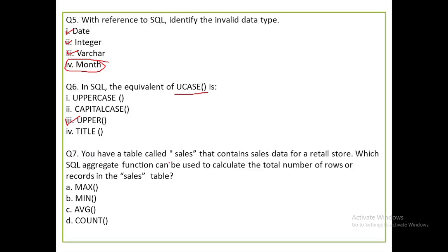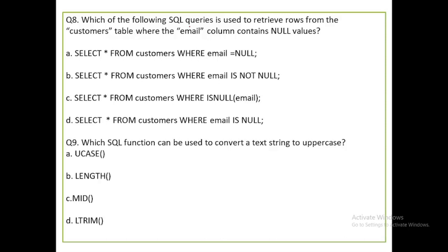You have a table called SALES that contains sales data for a retail store. Which SQL aggregate function can be used to calculate the total number of rows or records in the SALES table? MAX finds the maximum value, MIN finds the minimum, AVG finds the average, and COUNT — the COUNT function — returns the number of non-null values.